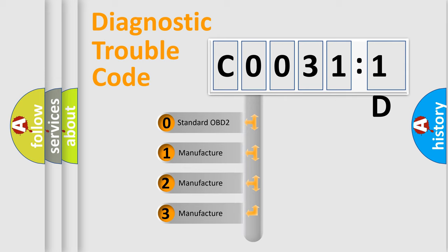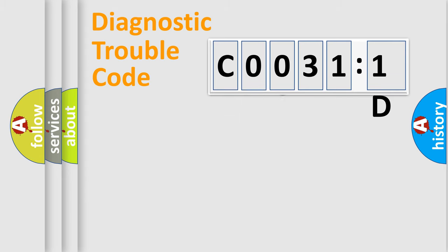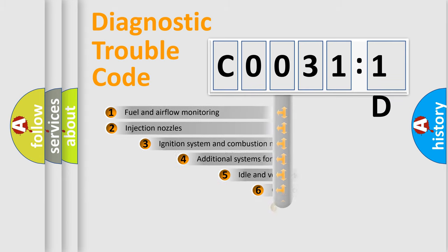If the second character is expressed as zero, it is a standardized error. In the case of numbers 1, 2, 3, it is a more precise expression of the car-specific error.